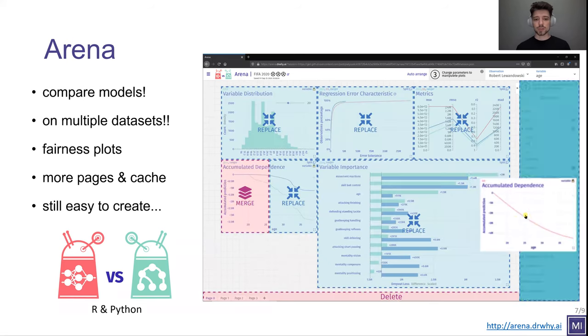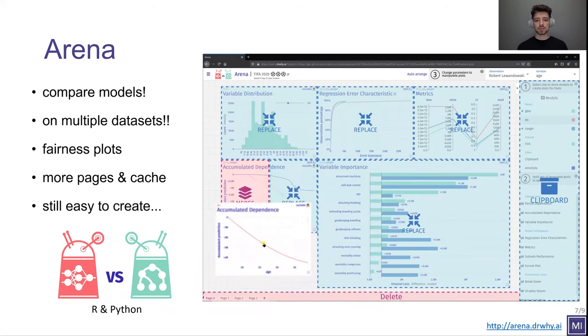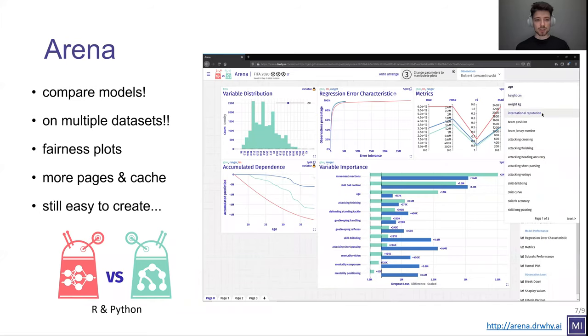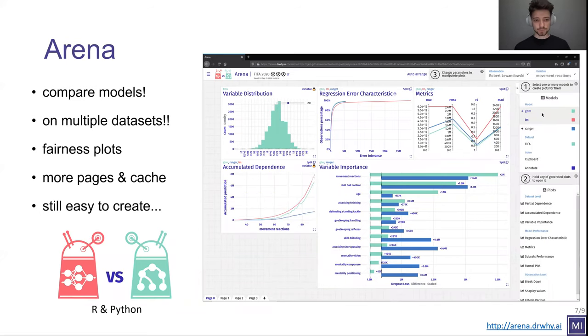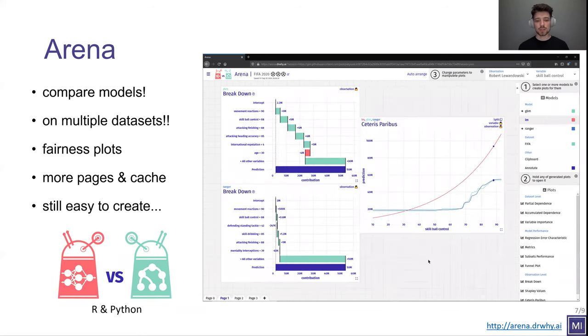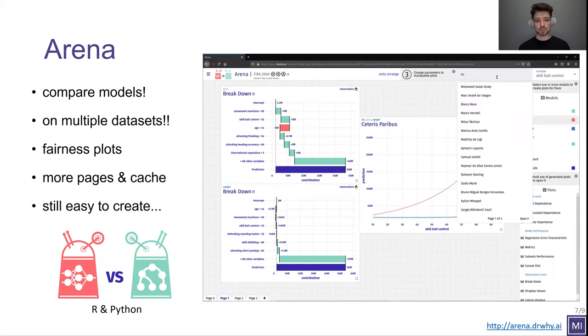Sometimes it is quite important to compare the explanations on the training and validation sets. There are also some fairness plots available for assessing the model bias. And here we see that we have a lot more pages available for us so we can save more explanations and more views of the model.